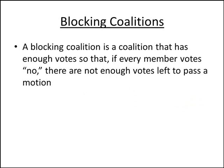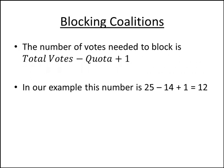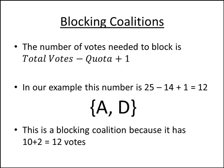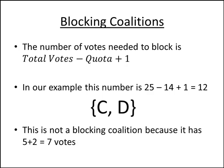We also need to consider a blocking coalition. A blocking coalition is a coalition that has enough votes so that if every member votes no, there are not enough votes left to pass a motion. To find the votes needed to block, take the total number of votes for the entire system, subtract the quota, and add 1. In our example, we have 25 total votes (10+8+5+2), minus the quota of 14, plus 1, gives us 12 — the blocking number. So you need 12 votes to block, but 14 votes to win in this system.